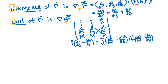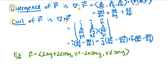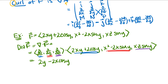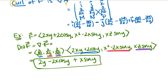Now I'm going to write down an example and calculate the curl and divergence of this vector field. For the divergence, taking the derivative with respect to x of the first component gives 2y; the derivative with respect to y of the second component gives minus 2x cosine y; and the derivative with respect to z of the third component gives plus x sine y. The divergence is a scalar function, and we'll talk later about what that answer means.